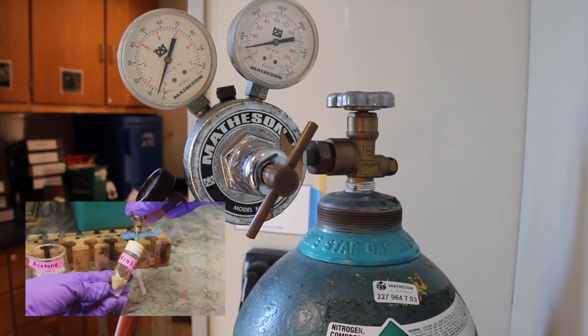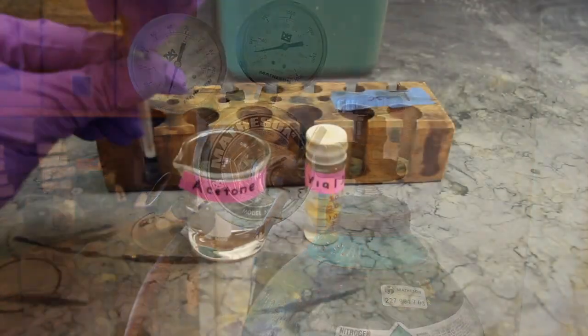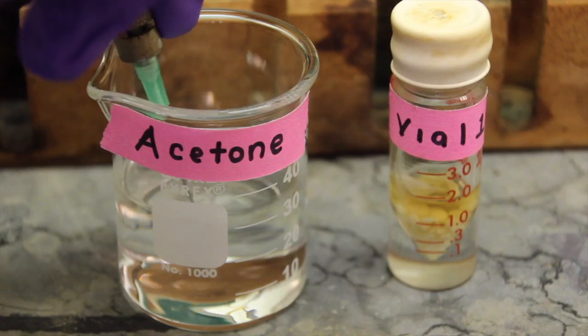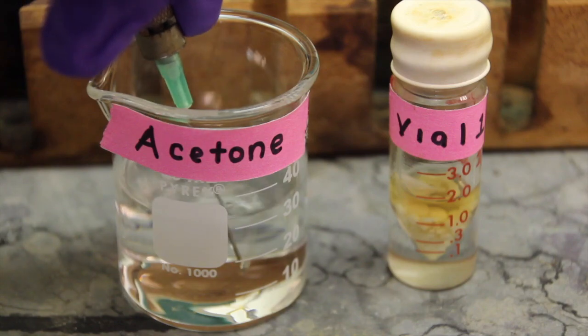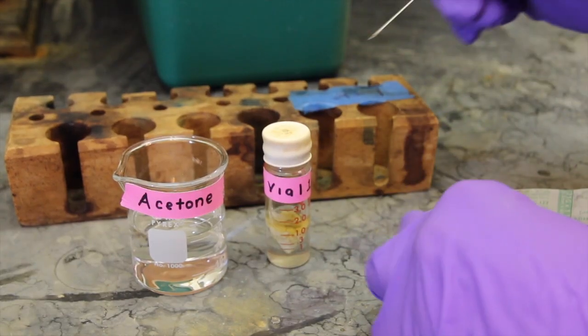Next, flush and sparge the vial with nitrogen for one minute. The gas lines will be prepared for you in the hood. You can confirm the gentle flow rate and check that the needle is not clogged by placing a needle from the gas line into a beaker of acetone. The gas line should generate a continuous stream of small bubbles in the acetone.